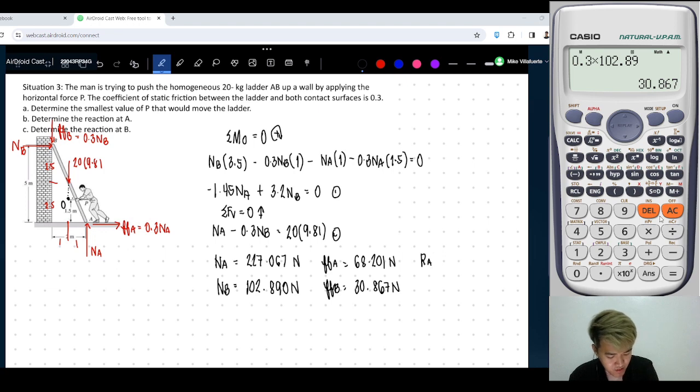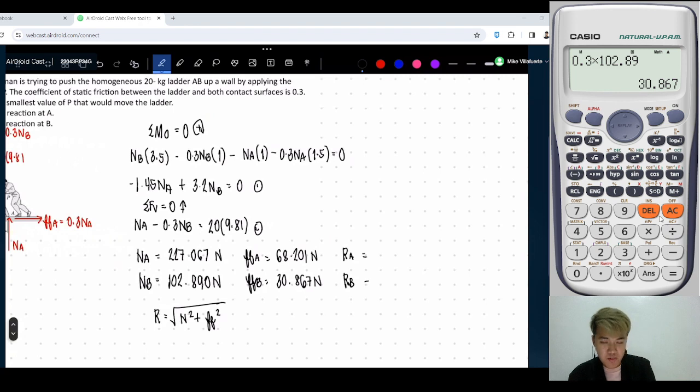So RA and RB. The formula for resultant is equal to the normal force squared plus the frictional force squared. How to solve for the resultant? That is 227.067 squared plus 68.201 squared, that is equal to 237.088 N. Then next, 102.890 squared plus 30.867 squared, that is equal to 107.420 N.